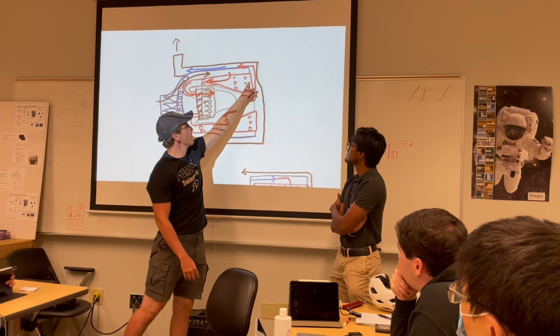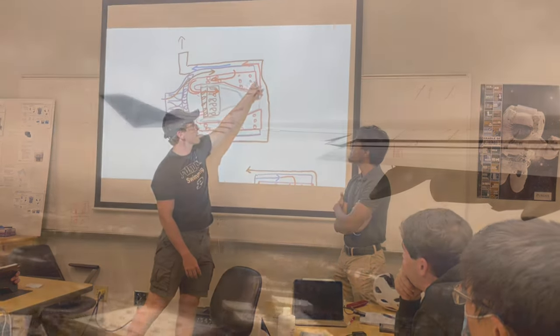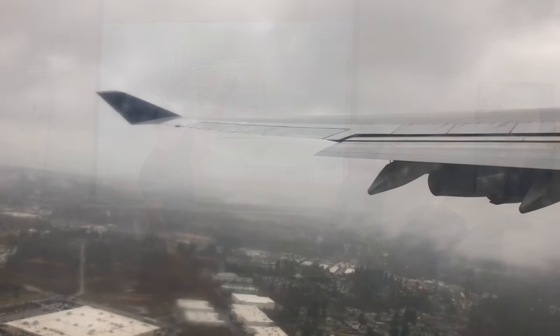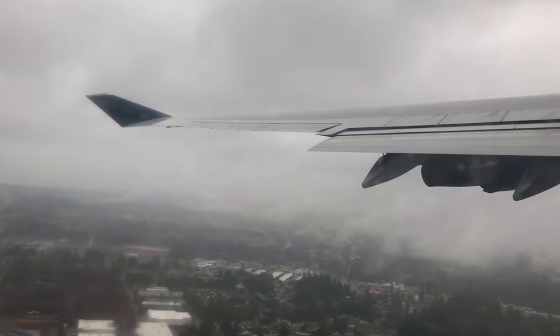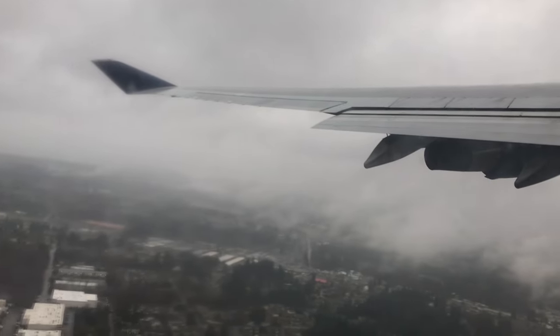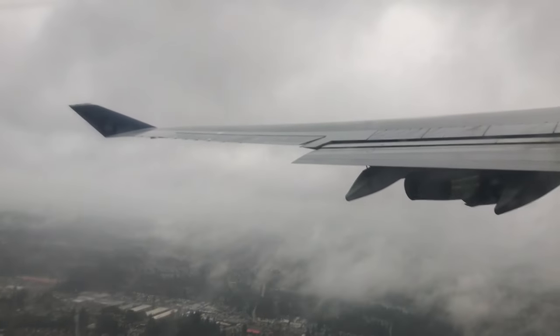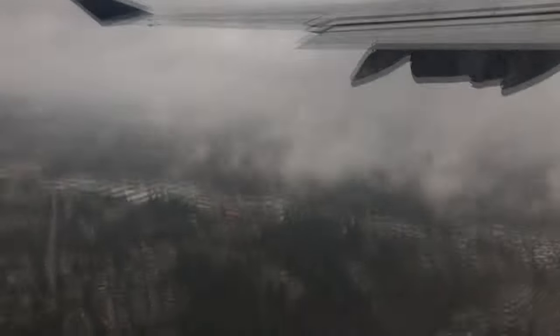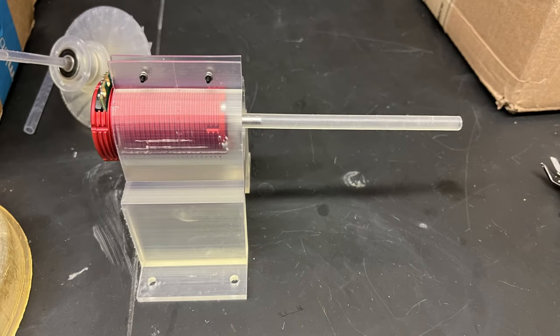A gas turbine is used in all different types of aircraft, from jets to drones to military aircraft, and works off the theory of combusting fuel with compressed air, using that combustion product to drive the cycle over again, and create thrust or spin a generator for power generation.